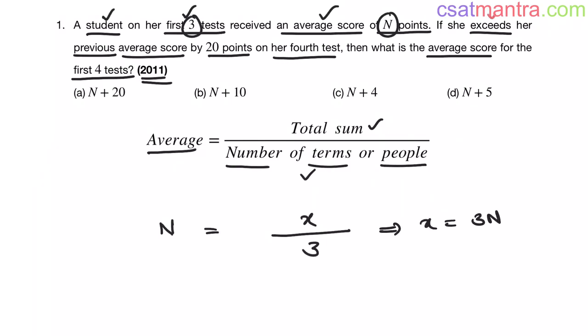Now if she exceeds her previous average score by 20 points, she exceeds her previous average score by 20 points. Previous average score is N. Now in the fourth test she exceeded by 20 points more. So the points obtained in fourth test would be N plus 20. This is clear, right?